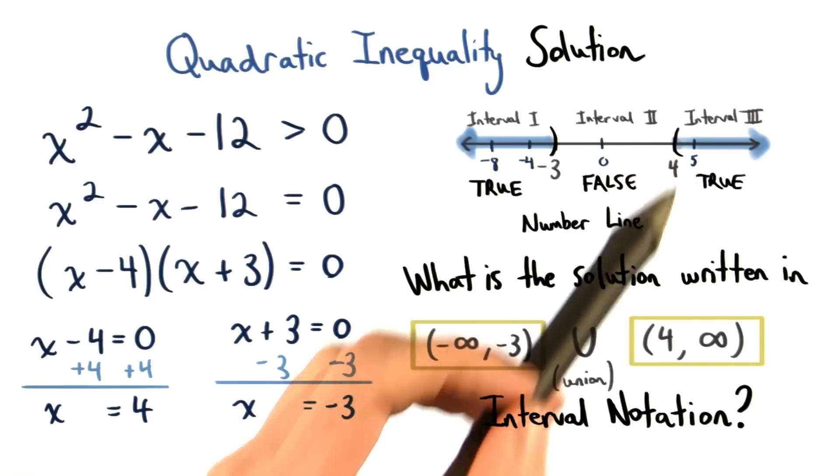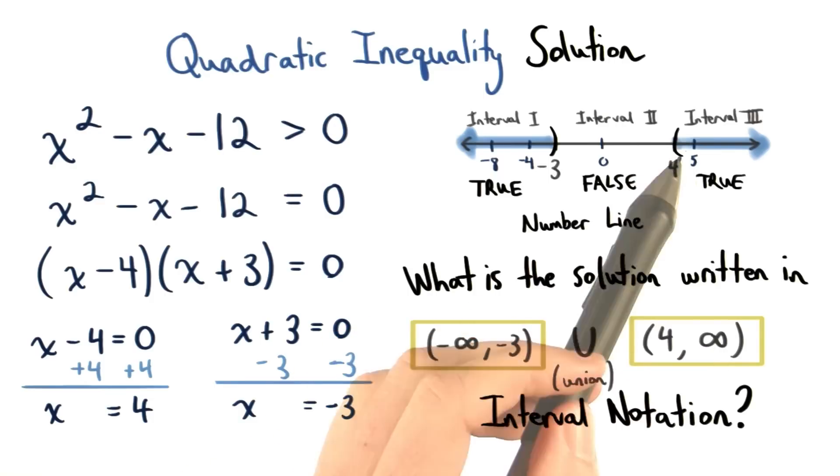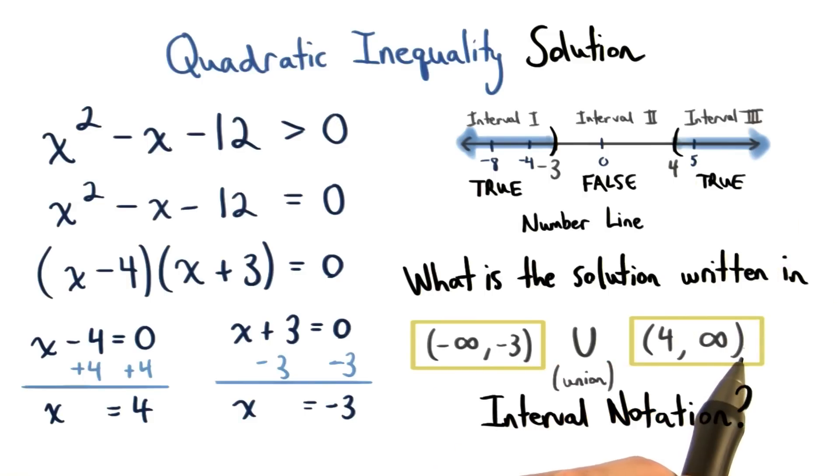The right hand side would be 4 comma infinity. This would be the second interval. Be sure to include parentheses here because we can't include these two values.